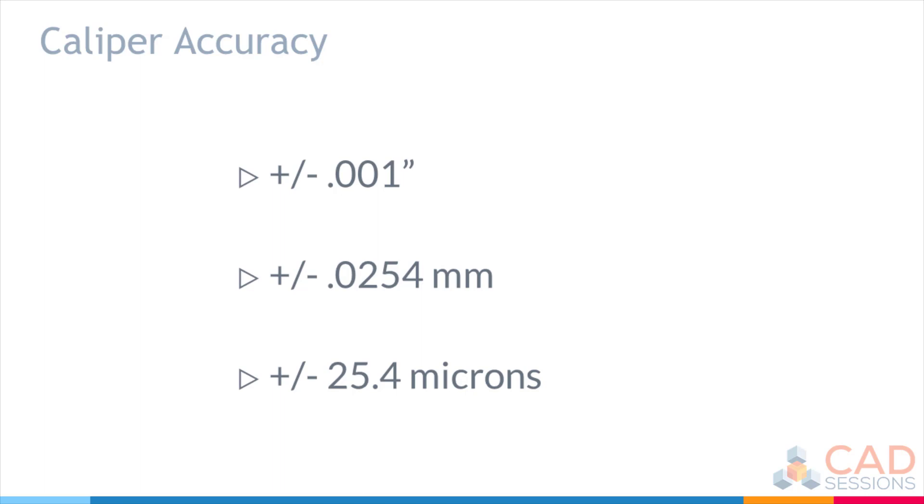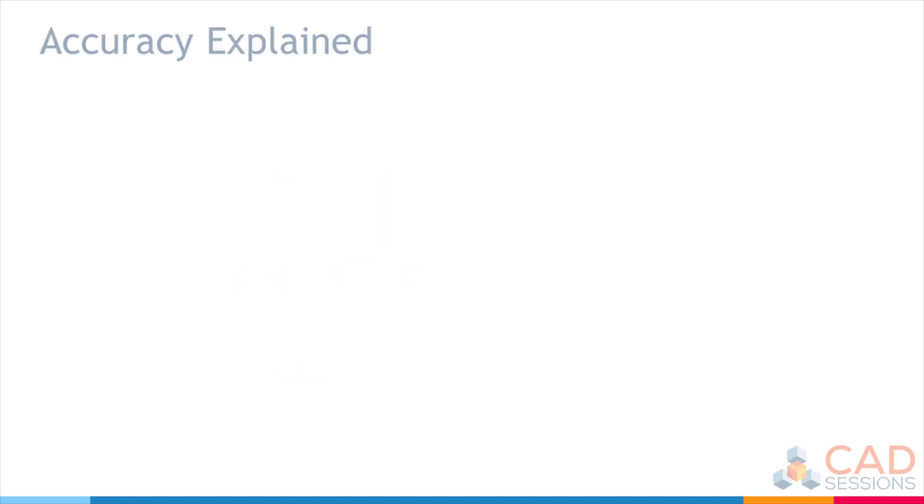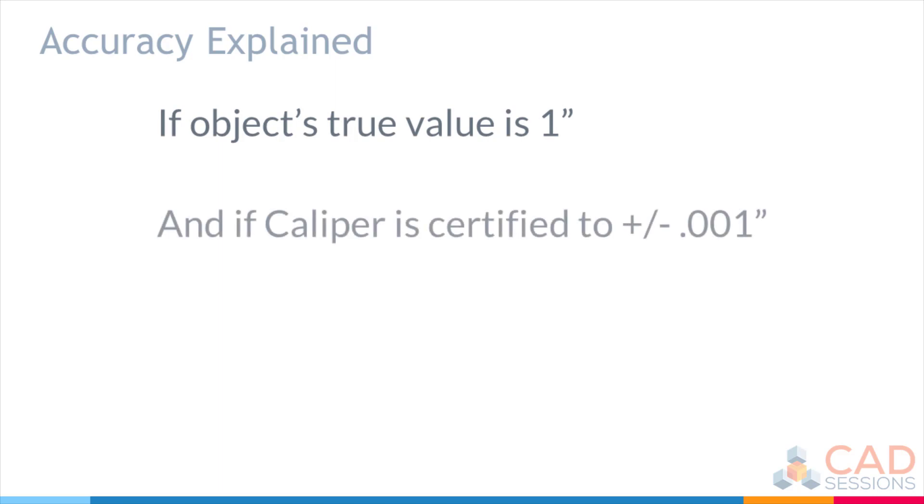So, what do I mean by accuracy? For example, in inches, it means if something that you're measuring has a true value of 1 inch, and the caliper is certified to a measurement accuracy of ±0.001 inches,